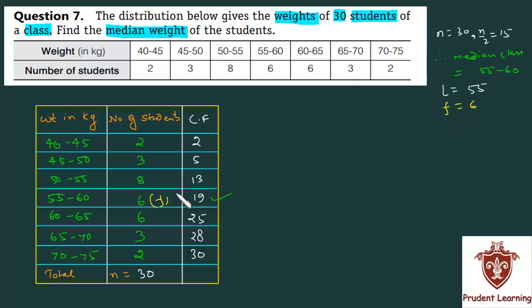The frequency of the class preceding the median class - this is the median class, the preceding class frequency, I mean the cumulative frequency. This is the cumulative frequency of the class preceding the median class, which is 13. Class size H, if you look at the median class, is 5.